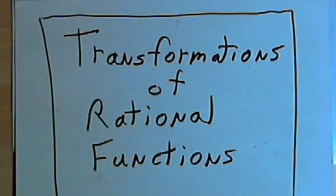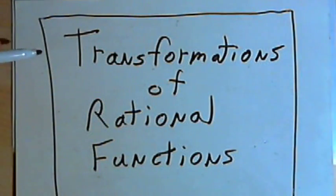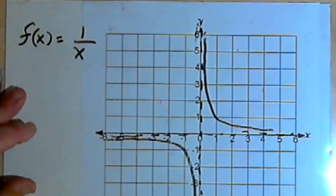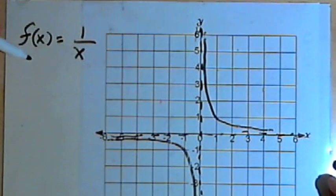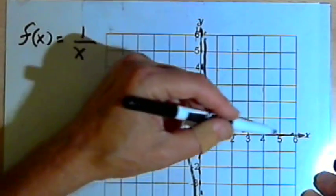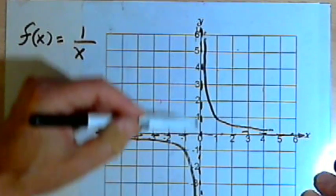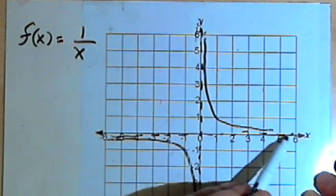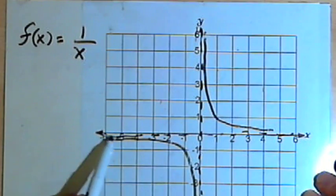This video is provided as supplementary material for courses taught at Howard Community College. In this video I'm going to talk about some transformations of rational functions. Let's start out with the basic function f equals 1 over x. I've sketched a graph of this. It's got a vertical asymptote along the y-axis, or x equals zero, and a horizontal asymptote along the x-axis, or y equals zero.